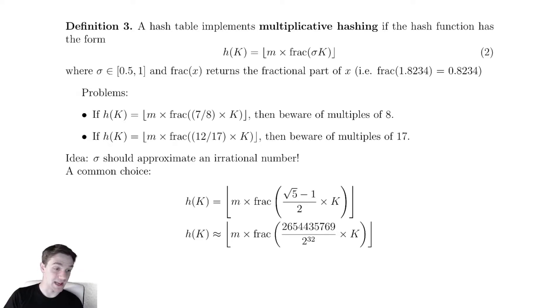If we were to, for example, choose sigma equals 7 eighths. Let's say I chose k is equal to 8. Then 7 eighths times 8 is 7. And the fractional part of 7 is 0. And let's say I chose k equals 16. Then I would have that 7 eighths times 16 is 14.